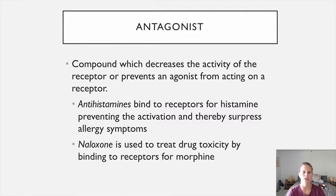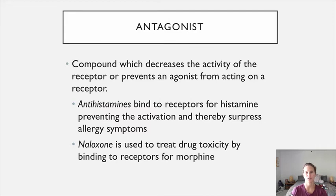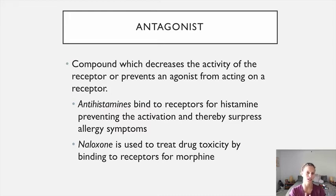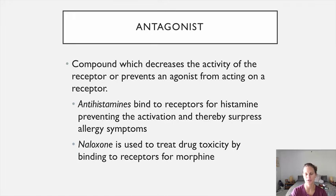Naloxone is another really good example of an antagonist. Naloxone blocks the opioid receptors, and so it's used specifically in cases of overdose with opioids like morphine or heroin. It just sits on top of that receptor, so the action of morphine or heroin can't occur — morphine can't bind, and so it antagonizes the effect.